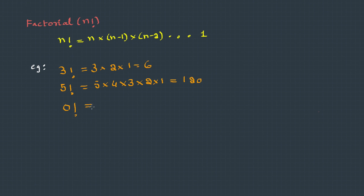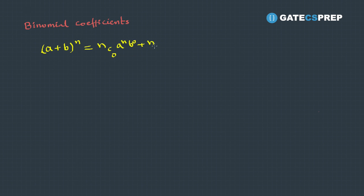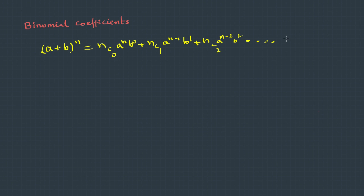0 factorial is taken as 1 — this is important, keep this in mind. Binomial coefficients: when we go for the expansion of (a + b)^n, this is nC0 * a^n * b^0 + nC1 * a^(n-1) * b^1 + nC2 * a^(n-2) * b^2, and so on. The last term will be nCn * a^0 * b^n. The coefficient of each term is called the binomial coefficient.